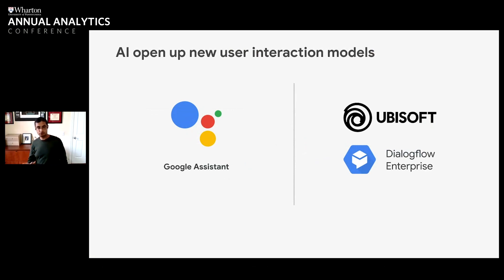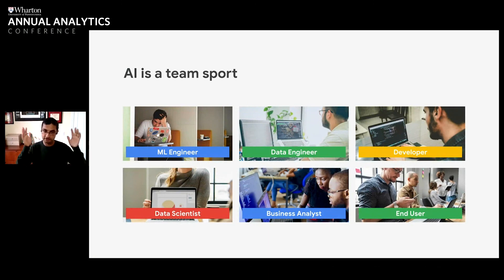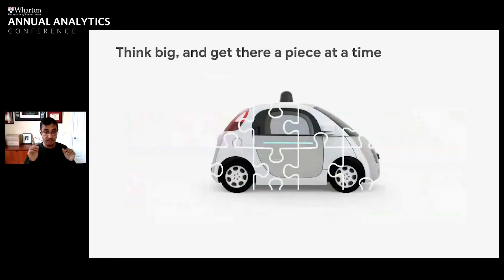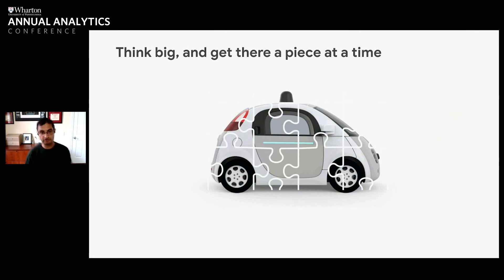The last thing is that AI is really a team sport. It's not going to be just a set of data scientists — you have to have everybody involved, from machine learning engineers all the way through to the end users. And finally, you should be thinking big. AI is going to transform every industry over the course of the next 10 years. Think big, but take it one piece at a time. Think about how each piece is going to get you to that end goal and create the transformation you want.